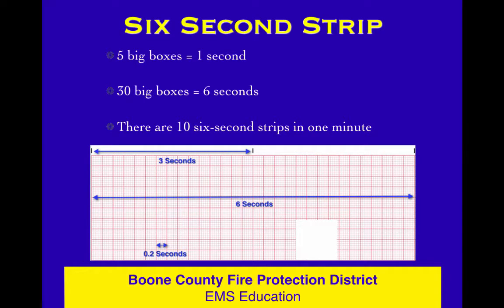The six-second strip method: there are five big boxes in one second, which gives you 30 big boxes for six seconds. Nobody wants to count 30 boxes. You look at the marks at the top of the paper — those are three seconds apart, not six. You need two of those. Put them together, count the QRSs, multiply by 10. Now you've got your rate. Very simple method. That's pretty much it for rate determination for now.